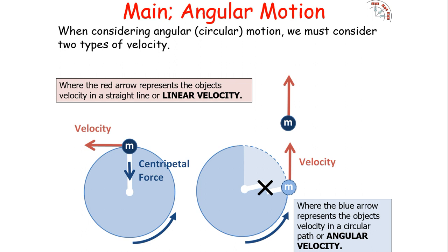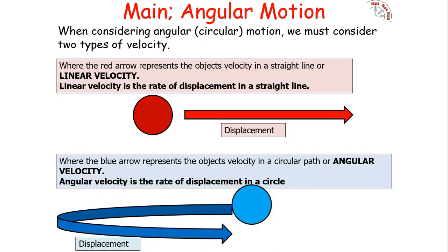When considering circular motion, we have two types of velocity. The linear velocity is the velocity an object would take if the centripetal force were removed — the red arrow indicates this. The blue arrow indicates the object's angular velocity, or its velocity in a circular path. The red arrow represents velocity in a straight line — the rate of displacement in a straight line — while the blue arrow represents the object's velocity in a circular path, or angular velocity, which is the rate of displacement in a circle.